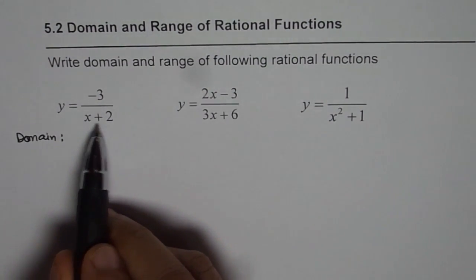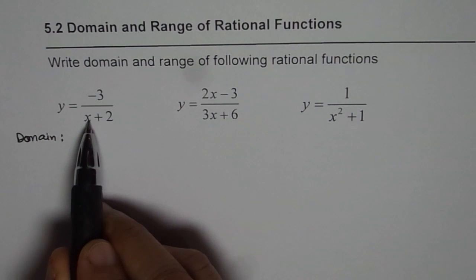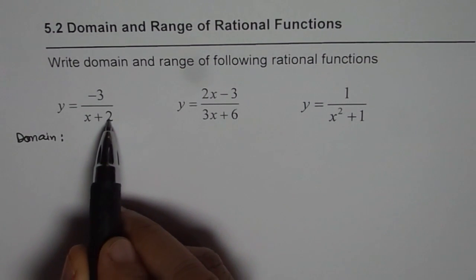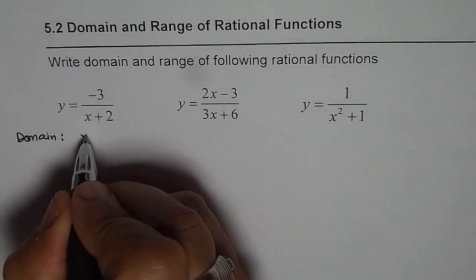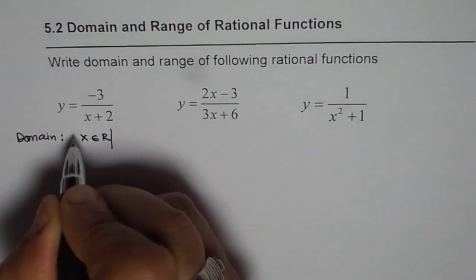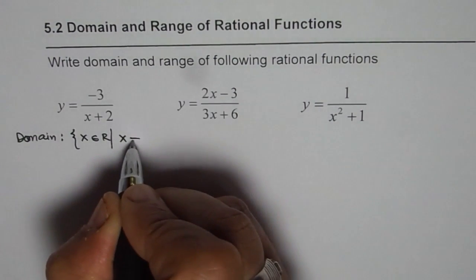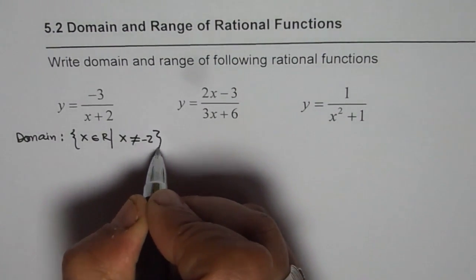Now for the first function, denominator cannot be minus 2. Since at minus 2 we have a vertical asymptote, since minus 2 would make this function something over 0, right? So the domain is x belongs to real numbers but x is not equal to minus 2. So this is the first one.